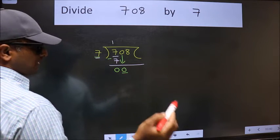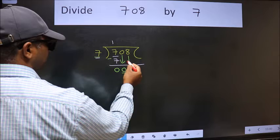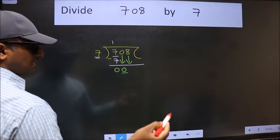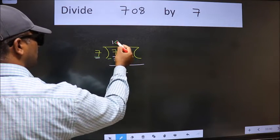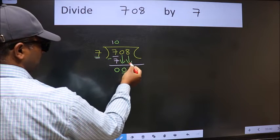So we should bring down the second number. And the rule to bring down second number is we should put 0 here. Then only we can bring this number down.